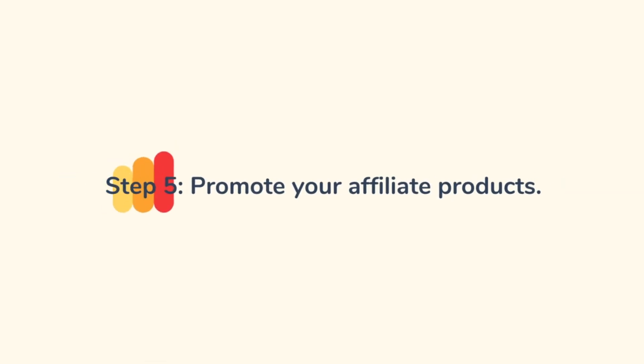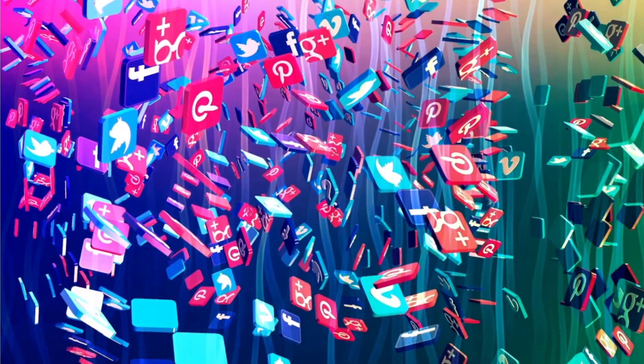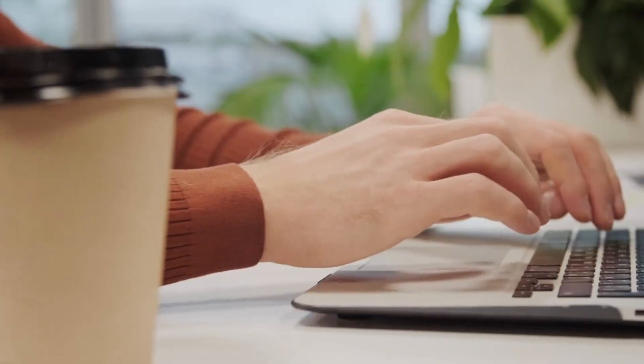Step five: promote your affiliate products. The final step in starting affiliate marketing is to promote your affiliate products. You can do this through your content, social media, email marketing, or any other marketing strategy that works for your niche.